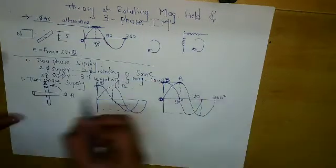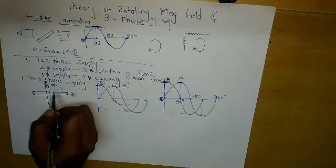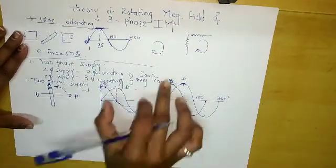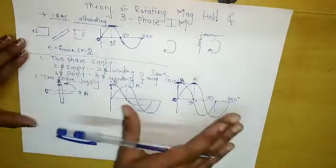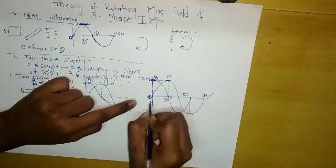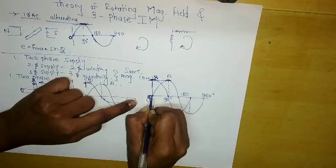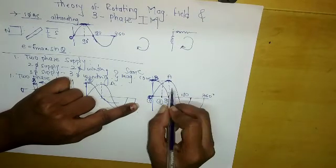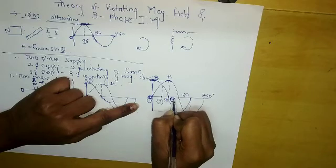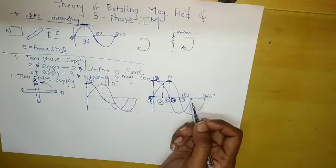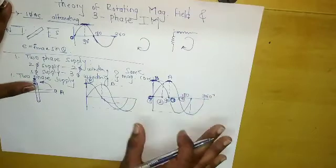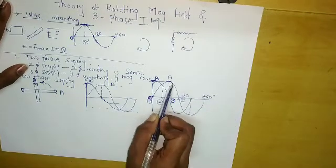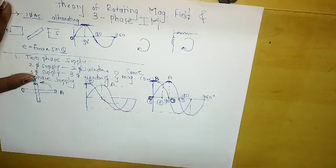Because we have placed them 90 degrees apart. Now we will draw the vector diagram and see the direction — to check whether it is rotating or not. For the two-phase case it is rotating. We will consider certain points: point 1 at 0°, point 2 at 45°, point 3 at 90°, and point 4. We are going to take the instantaneous values of flux.